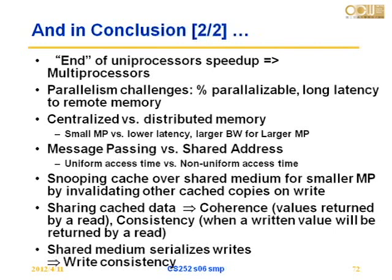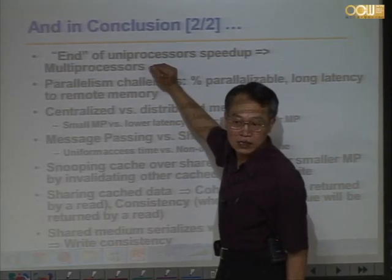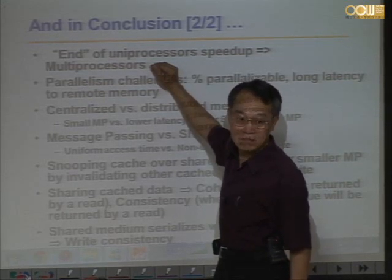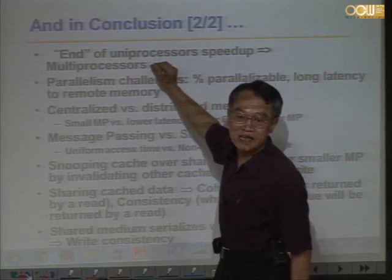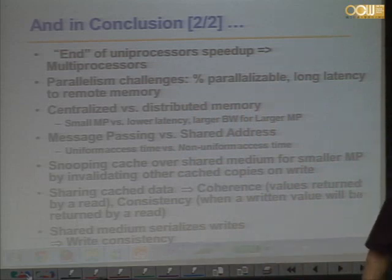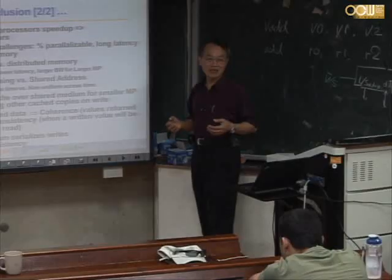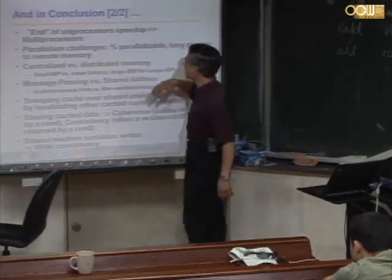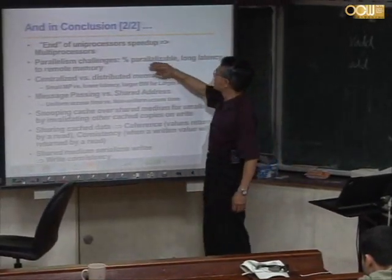For the uniprocessor, the speed-up curve is flattening, so we have to go to the multiprocessor way sooner or later. We started the study of multiprocessing in the 60s — long, long time ago — and today the research issues still remain the same. Nothing is really new; only the physical parameters change. Parallelism challenges include the percentage of code that's parallelizable.